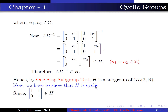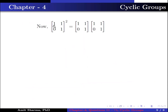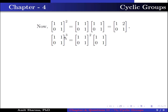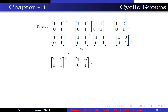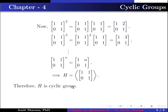Now we show H is cyclic. Since 1 belongs to Z, the matrix [1, 1; 0, 1] belongs to H. The square of [1, 1; 0, 1] equals [1, 2; 0, 1], the cube equals [1, 3; 0, 1], and continuing in this way, the nth power equals [1, n; 0, 1]. This implies H is generated by [1, 1; 0, 1], therefore H is a cyclic group, and hence H is a cyclic subgroup of GL2(R).